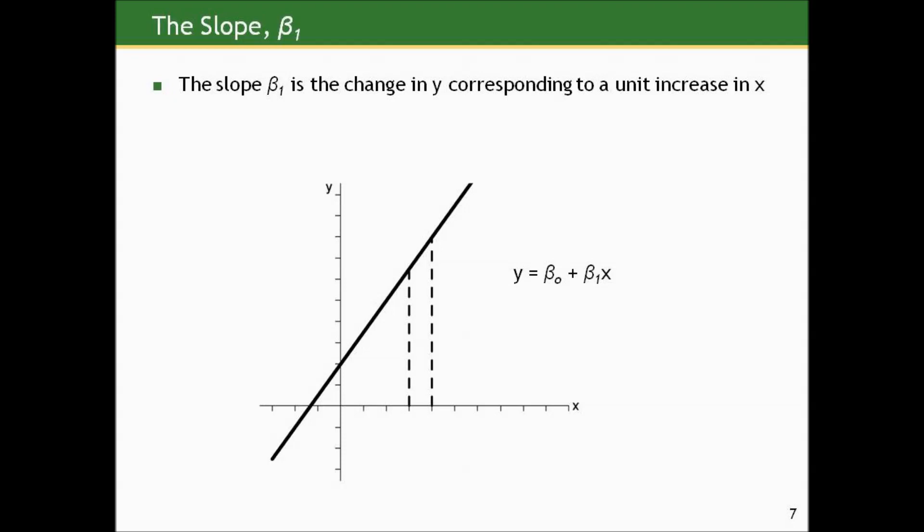The slope, β1, is the change in y corresponding to a unit increase in x. Here, represented by the dotted lines, are two values of x that differ by one unit. This shaded area, how much y changes as we go from the first x value to the second, is our slope β1. Here we have a positive slope; y increases as x increases.